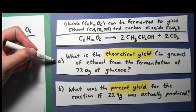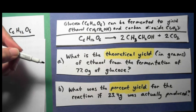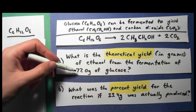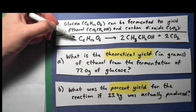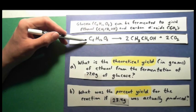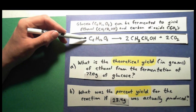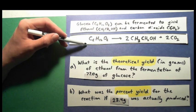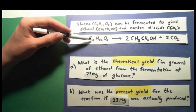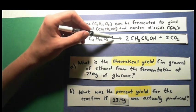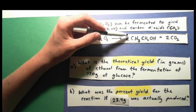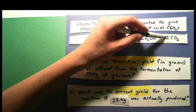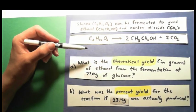The first thing I need to know is: what was the theoretical yield? What is the maximum I could have made from that 77 grams of glucose according to the balanced chemical equation? This balanced chemical equation tells me that one mole of glucose — one mole of C₆H₁₂O₆ — can ferment and react to form two moles of ethanol and two moles of carbon dioxide.